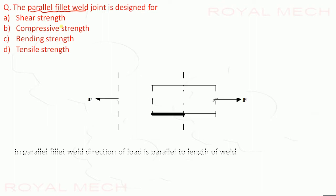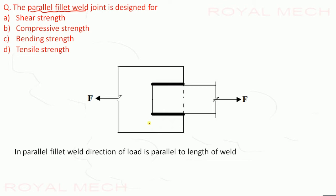The parallel fillet weld joint is designed for: shear strength, compressive strength, bending strength, or tensile strength. In parallel fillet welding, the direction of load applied is parallel to the length of the weld. Therefore, it is designed for shear strength. Option A is the correct option.